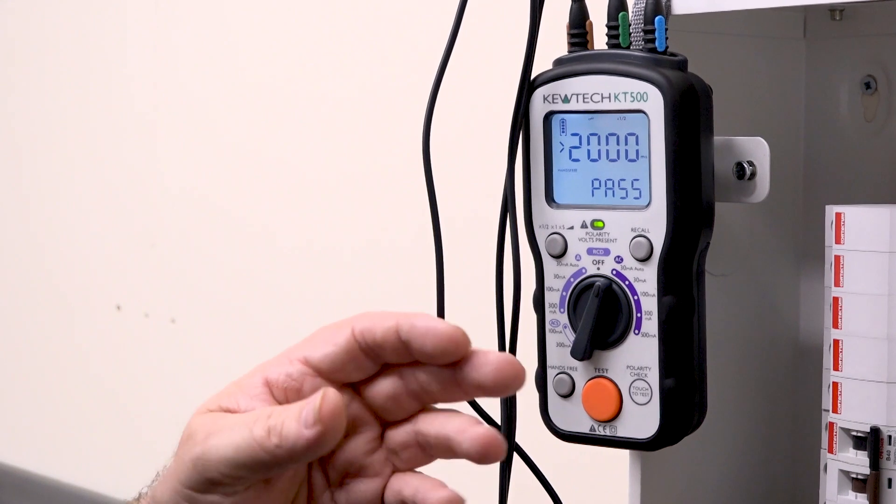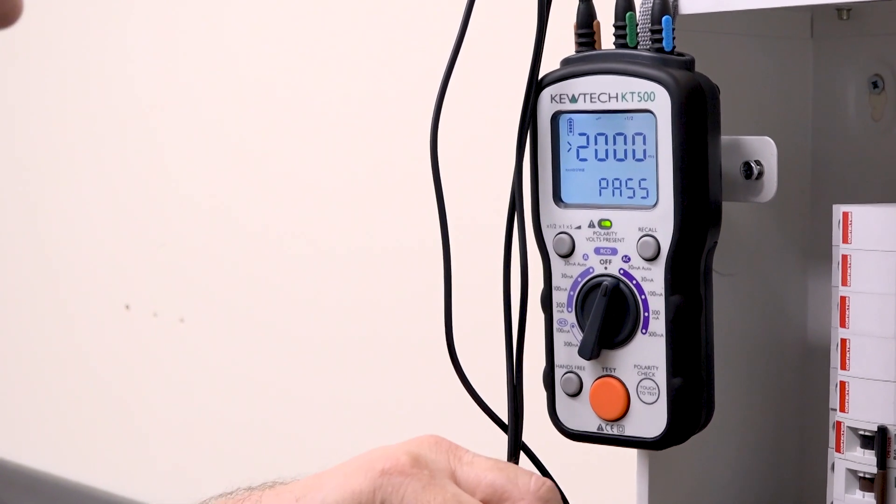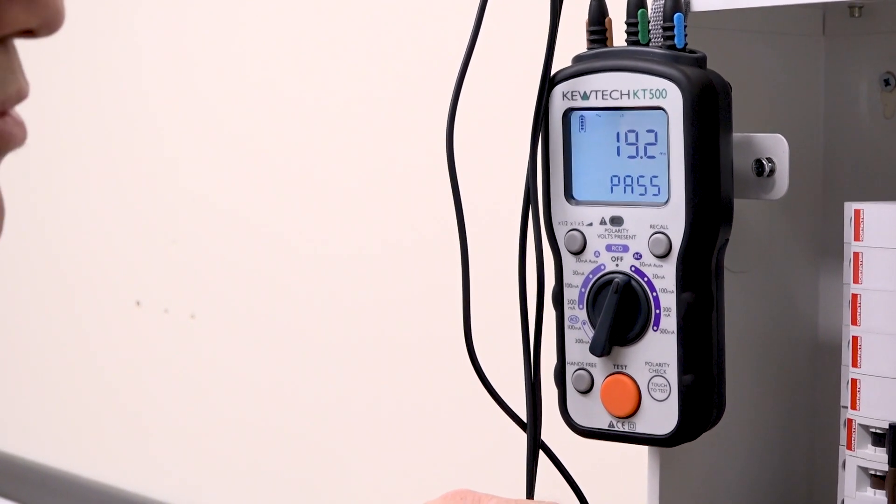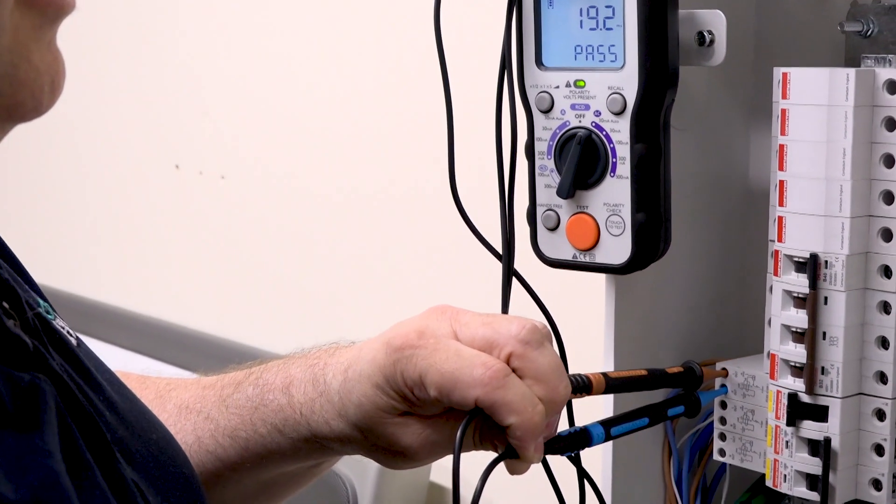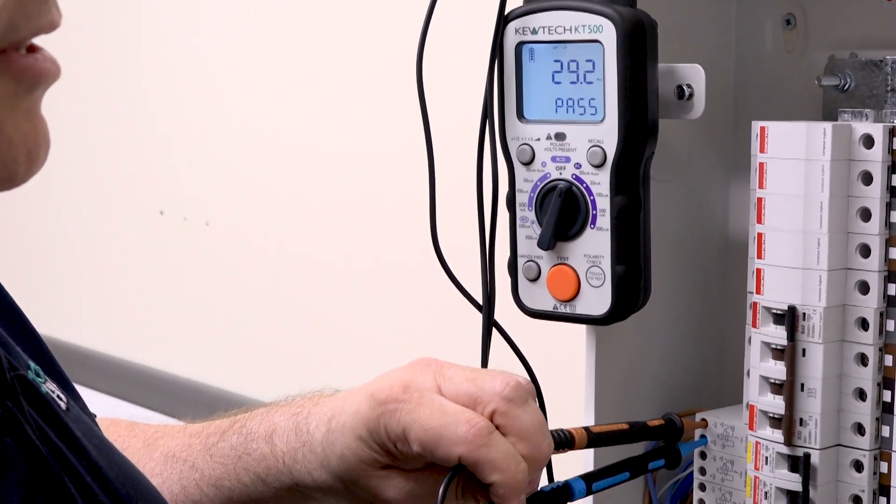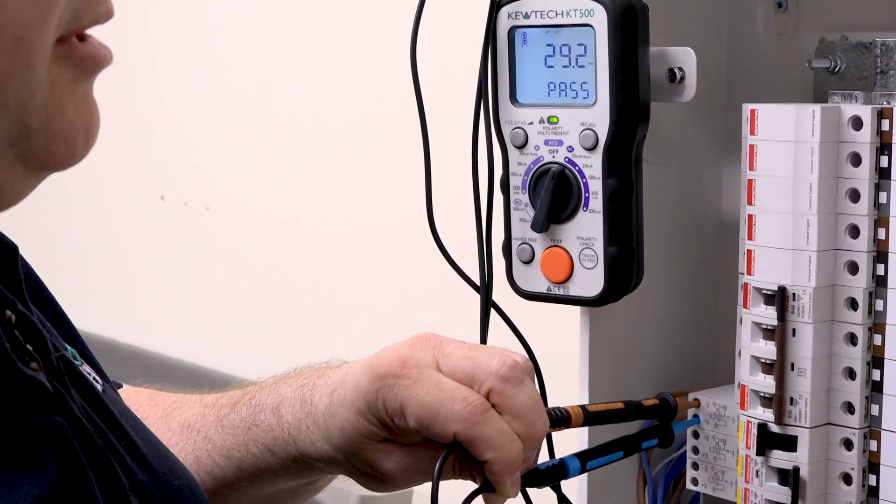...zero degrees, 180 degrees. And because it's a 30 milliamp, we'll do a times five for additional protection. So it's going through the sequence. There's the first one—it's tripped, so that's a times one. It's always best to give it two seconds, wait a couple of seconds before you reset it. So turn it back on.